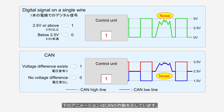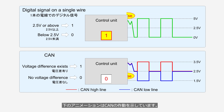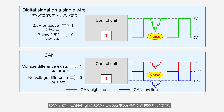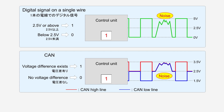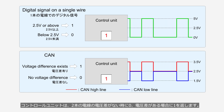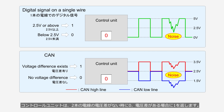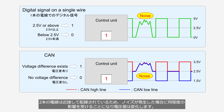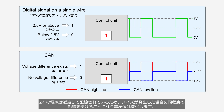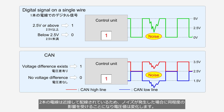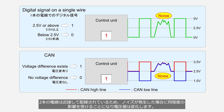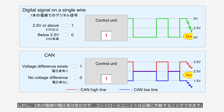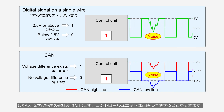In CAN, communication is conducted using two wires, CAN high and CAN low. The control unit returns zero when there is no voltage difference between the two wires, and returns one when a voltage difference is present. Because the two wires are closely routed, in the event of noise, both wires are equally affected, causing changes in voltage values. However, the voltage difference between the two wires remains unchanged, allowing the control unit to operate accurately.